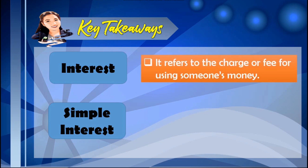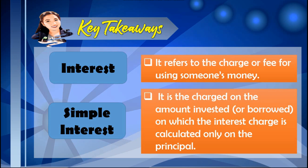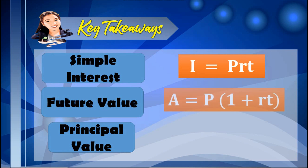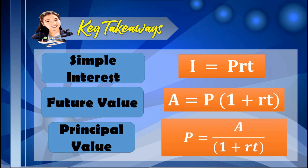Here are the important concepts to take note of: Interest refers to the charge or fee for using someone's money. There are two types — simple interest and compound interest. Simple interest is the charge on the amount invested or borrowed, calculated only on the principal. To find the simple interest: I equals P times R times T. To find the future value: A equals P times (1 plus R times T). To find the principal value: P equals A divided by (1 plus R times T).